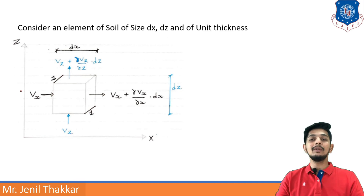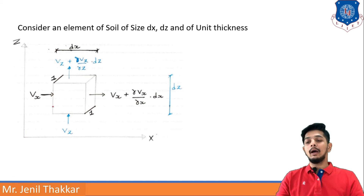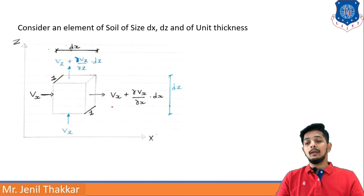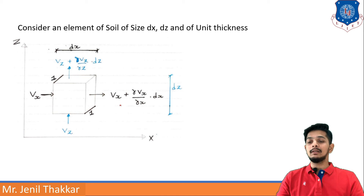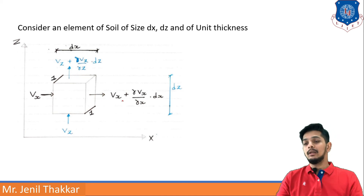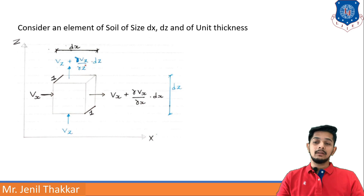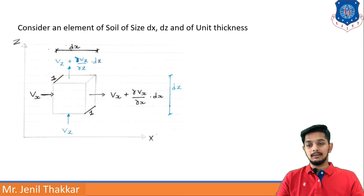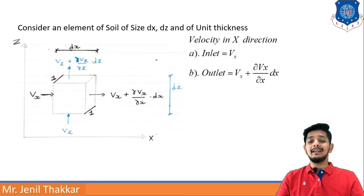We are talking about 2D flow, so dx and dz are the dimensions of this element. The element has an inlet and outlet: inlet from the left side is Vx (horizontal inlet), and the outlet is Vx + (∂Vx/∂x)·dx. Similarly, in the z-direction, the inlet is Vz and the outlet is Vz + (∂Vz/∂z)·dz.